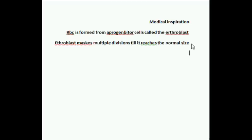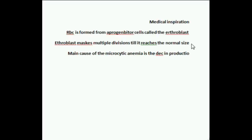So what happens in microcytic anemia? There is a decreased production of hemoglobin. The main cause of microcytic anemia is decreased production of hemoglobin, and as a result the erythroblast is going to make more divisions to keep the concentration of hemoglobin constant.